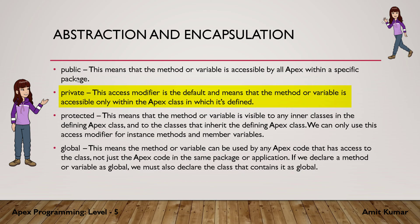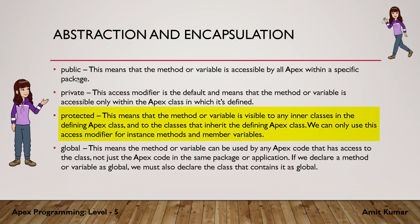Methods or variables declared as private cannot be accessed outside the class. If we talk about protected members, they can be inherited — that means if any member is protected, it can be inherited by a subclass. We will discuss inheritance in more detail later. Protected members can also be used by any inner class. An inner class is a class declared inside another class. So if there is a class ABC and another class XYZ inside ABC, then XYZ can access any protected member declared inside ABC.